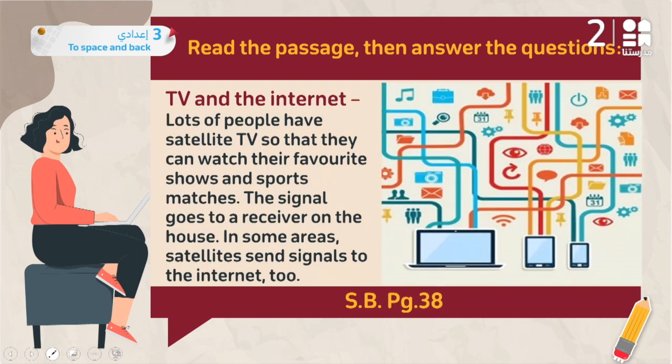Third use: TV and internet. Lots of people have satellite TV so they can watch their favorite shows and sports matches. The signal goes to a receiver on the house. In some areas, satellites send signals to the internet too.